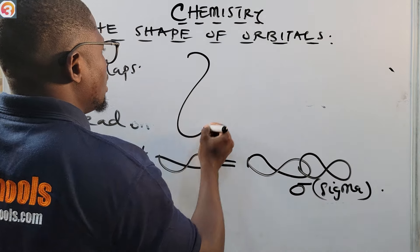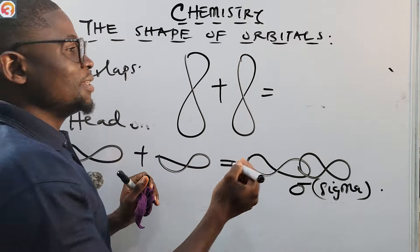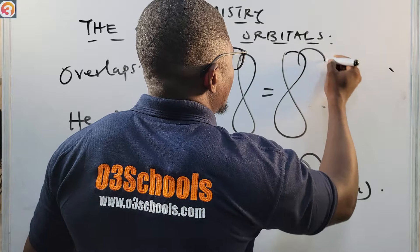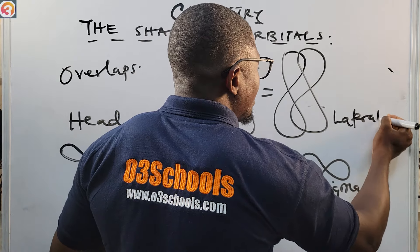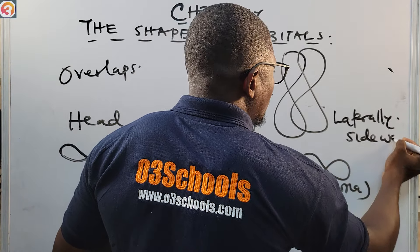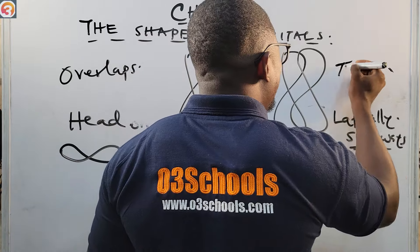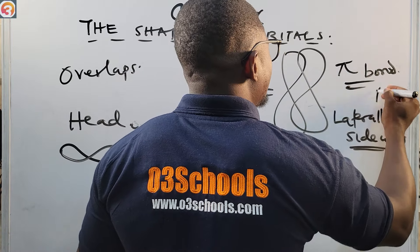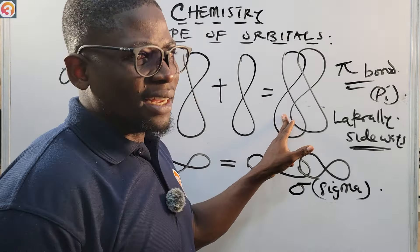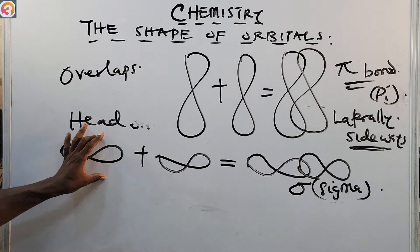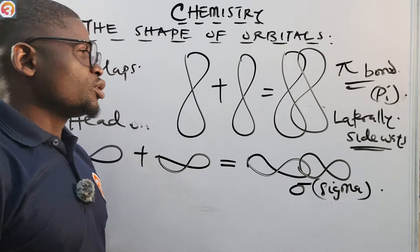But when two P orbitals overlap laterally — that is, sideways — a pi bond is formed. So: P orbitals overlapping head-on form a sigma bond, while P orbitals overlapping laterally or sideways form a pi bond. You must know this.